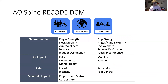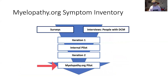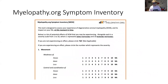We're really building on the AOSPINE Recode DCM initiative, which many of you would have been involved in. This brought people living and working with the condition together to work out what the critical aspects of the condition need to be measured at an absolute minimum. As part of that project, we conducted many surveys and also did some interview work with people living with the condition, which gave us a really full understanding of what was happening as a result of myelopathy.